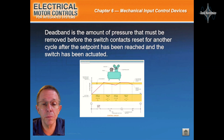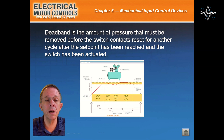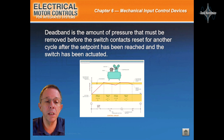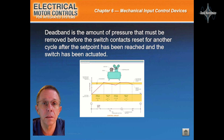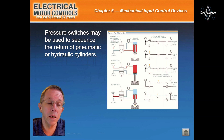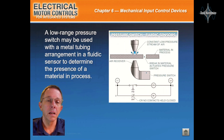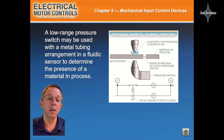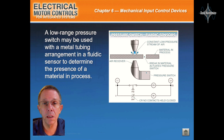Deadband is the amount of pressure that must be removed before the switch contacts reset after the set point has been reached and the switch has been actuated. Pressure switches may be used to sequence or return pneumatic or hydraulic cylinders. A low-range pressure switch may be used with a metal tubing arrangement and a fluidic sensor to determine the presence of a material in process.